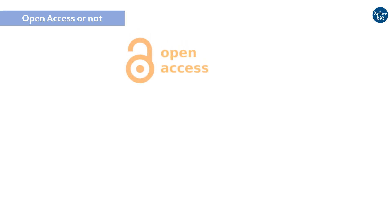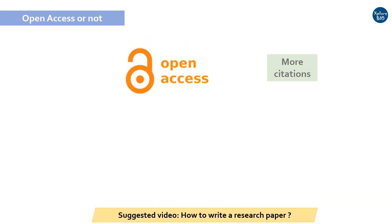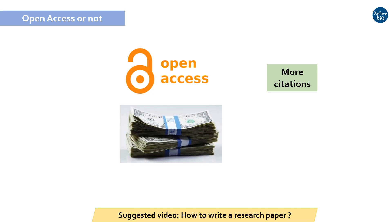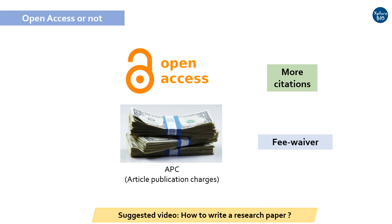Some journals offer you the choice between open access or non-open access. Papers published in open access journals generally have more citations as they can be accessed freely by readers without paying a subscription fee or article fee. But the authors have to pay a heavy publication fee, also known as article publication charges or APCs, once the paper is published. The fee varies from publisher to publisher and also depends upon the article type. Sometimes the journal waives off the fee if requested in advance.